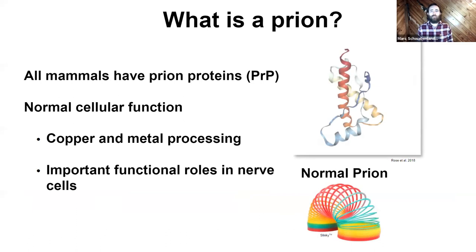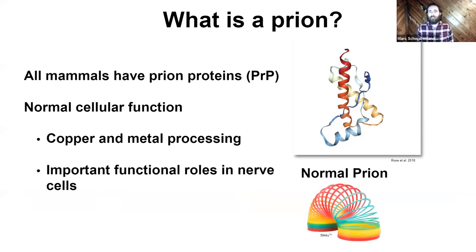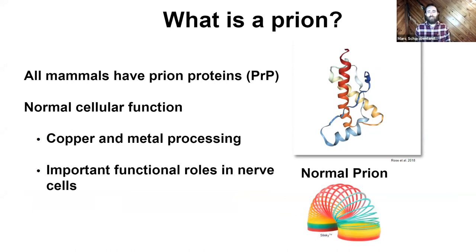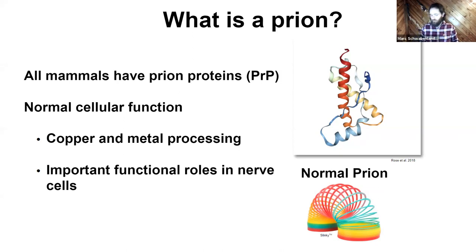One of the hardest parts about chronic wasting disease and prion diseases in general is: what is a prion? It's not a bacteria, it's not a virus. All mammals have normal prion proteins in their bodies — I have them, you have them, the deer outside have them — and they have normal cellular function. We're still learning what they really do, but we know they're important for copper and metal processing, particularly in nerve cells. On the right is a ribbon diagram of what scientists think this prion protein looks like, and below that I have a picture of a slinky — we'll explain why.